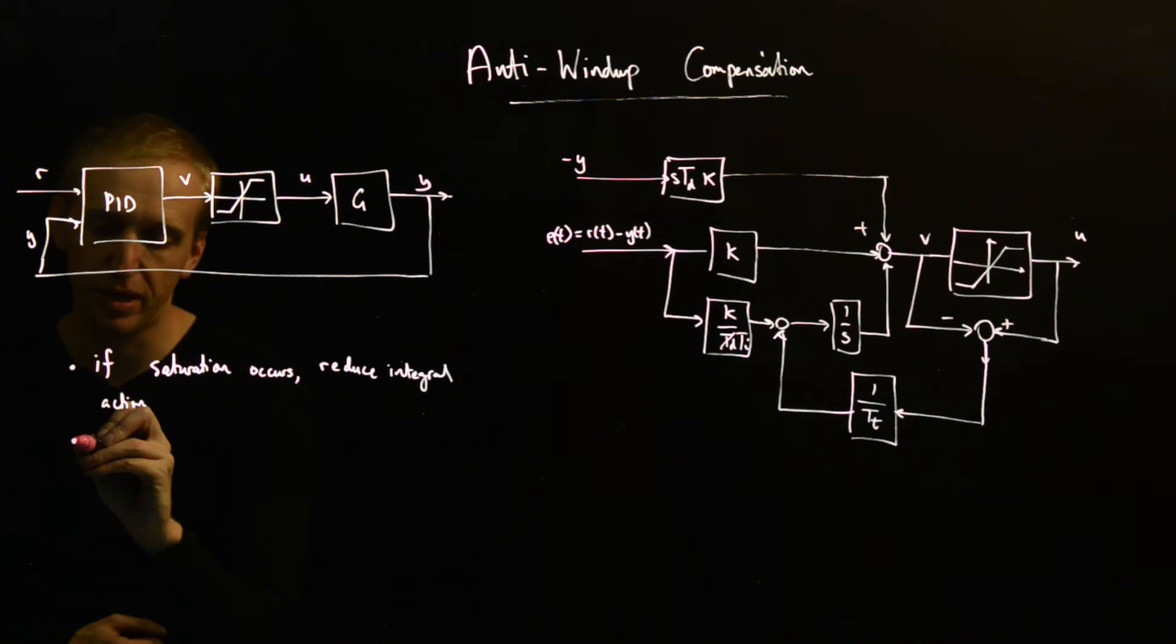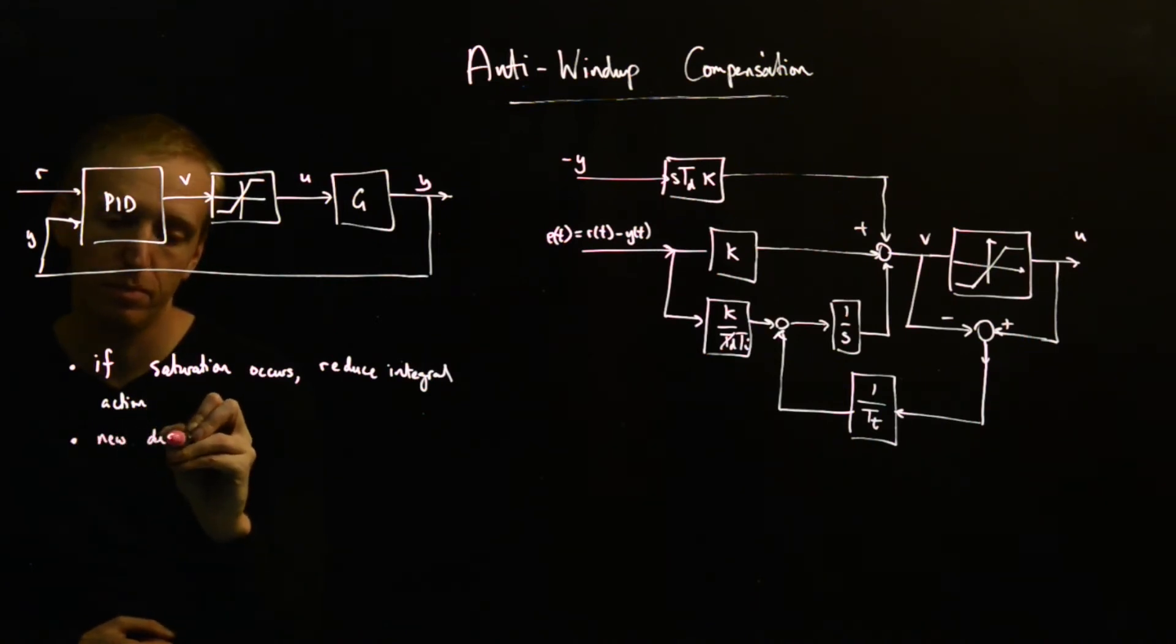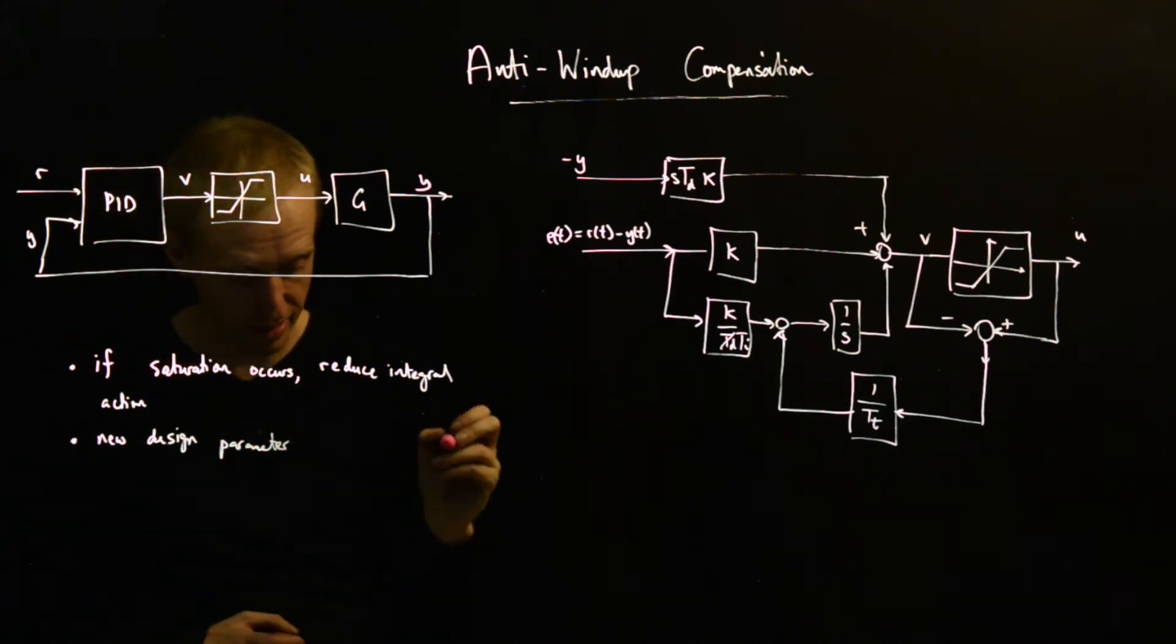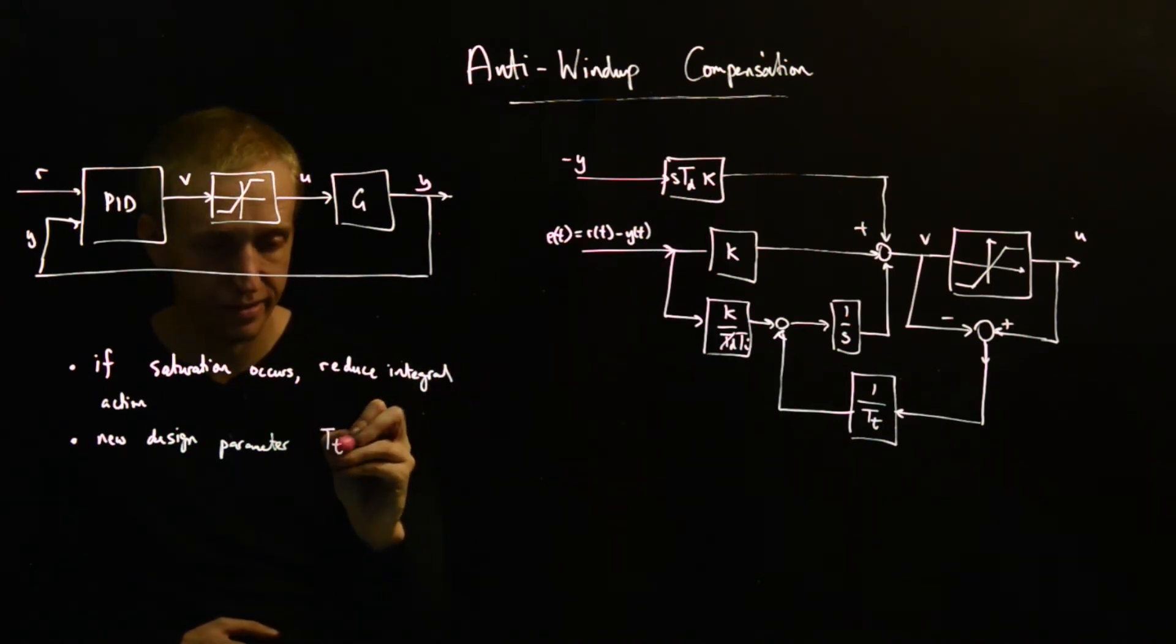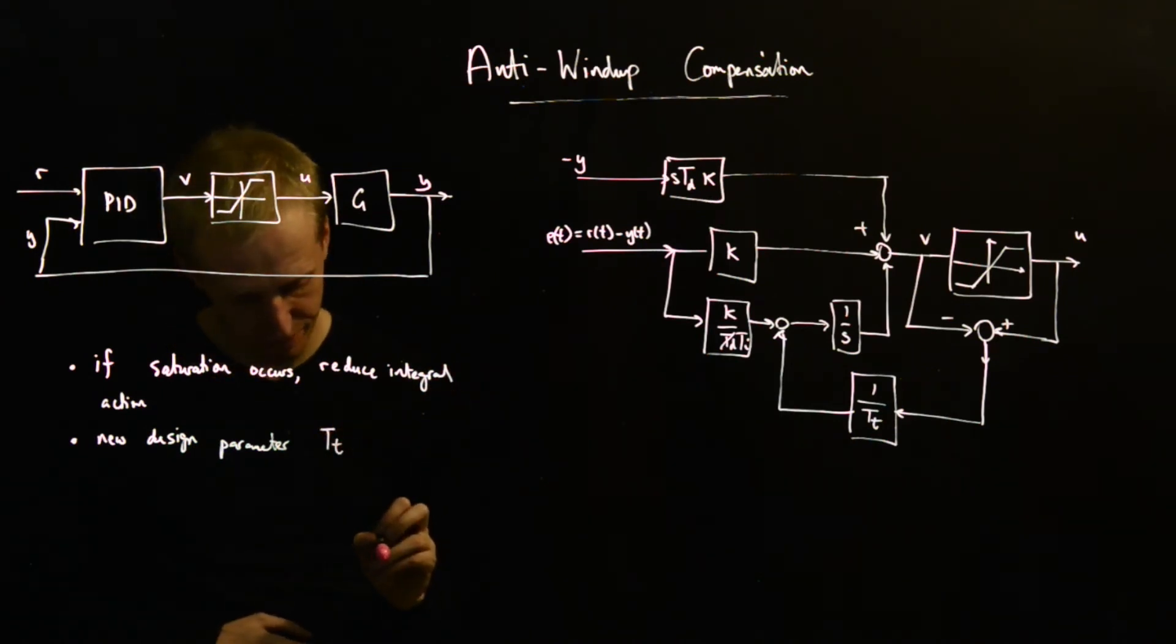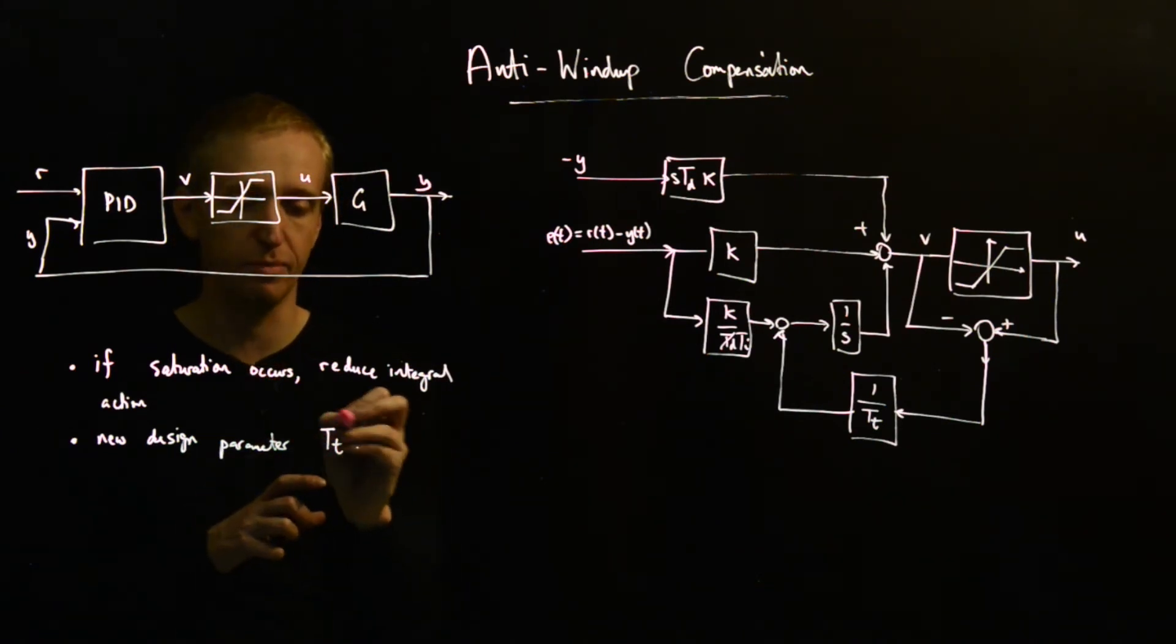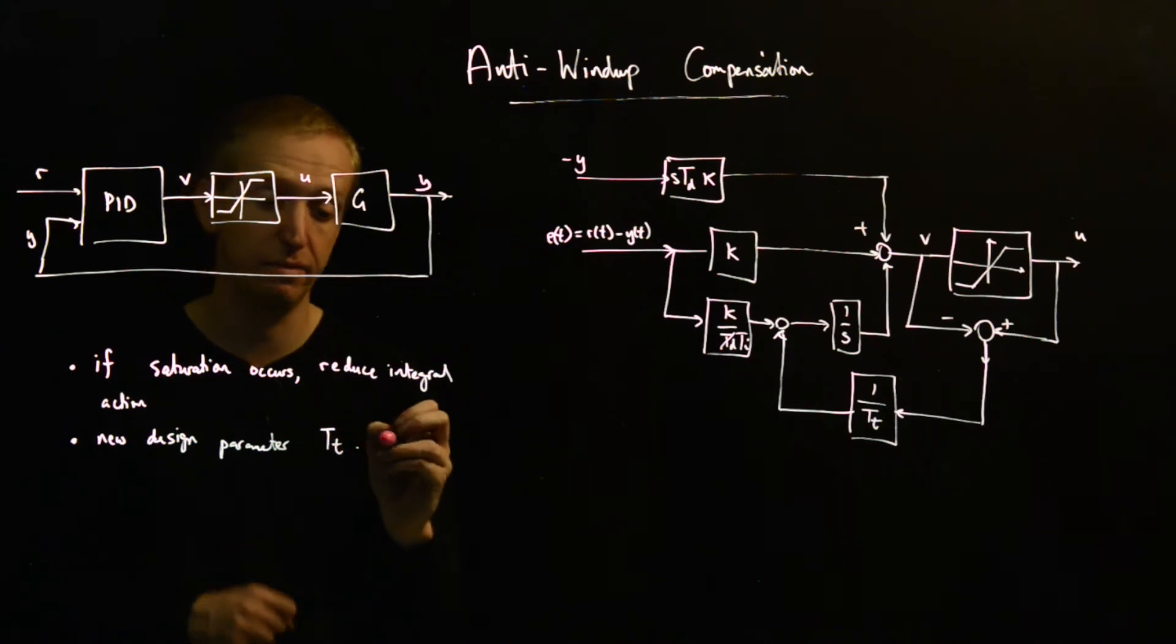And so we've got a new design parameter. Parameter. T_T. And the basic, you have some sort of trade-off in how you design T_T.